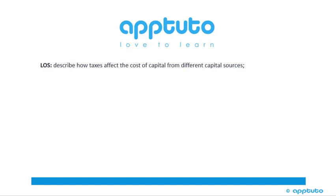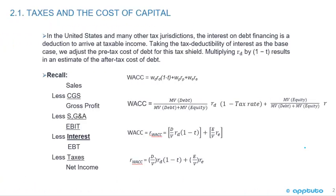This LOS describes how taxes affect the cost of capital from different capital sources. In the United States and many other tax jurisdictions, the interest on debt financing is a deduction to arrive at taxable income. Taking the tax deductibility of interest as the base case, we adjust the pre-tax cost of debt for this tax shield, multiplying the cost of debt by 1 minus the tax rate, which results in an estimate of the after-tax cost of debt.